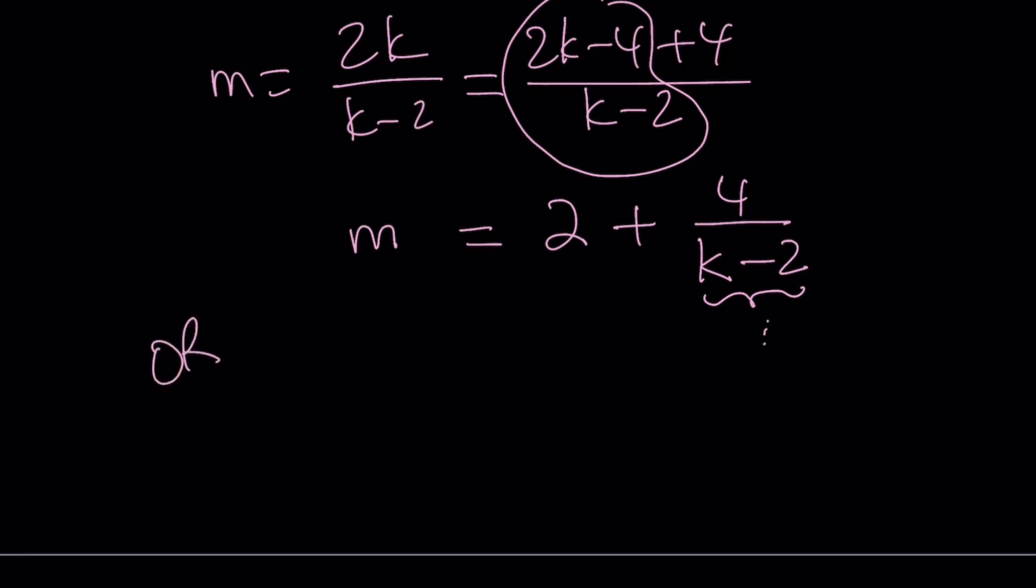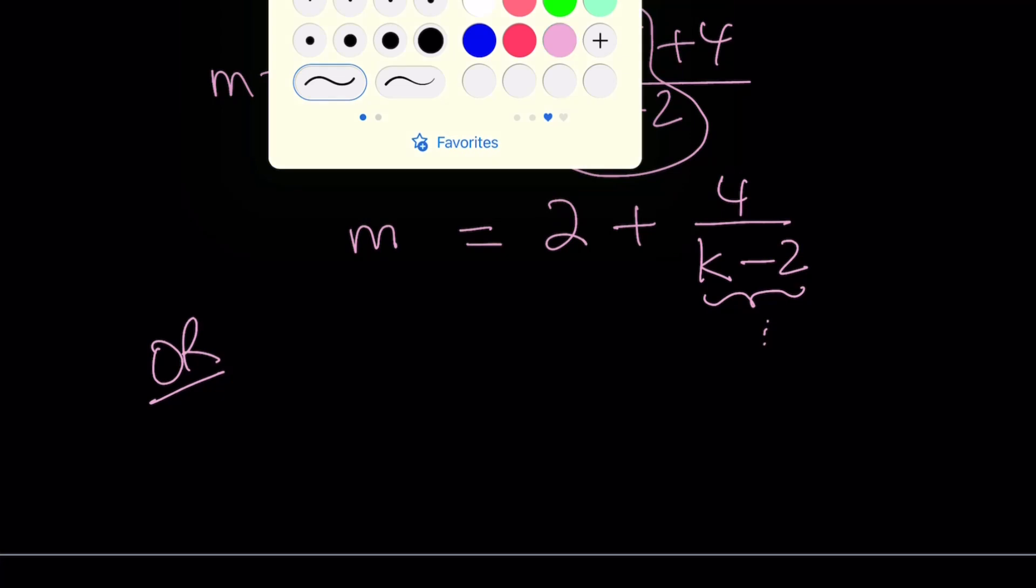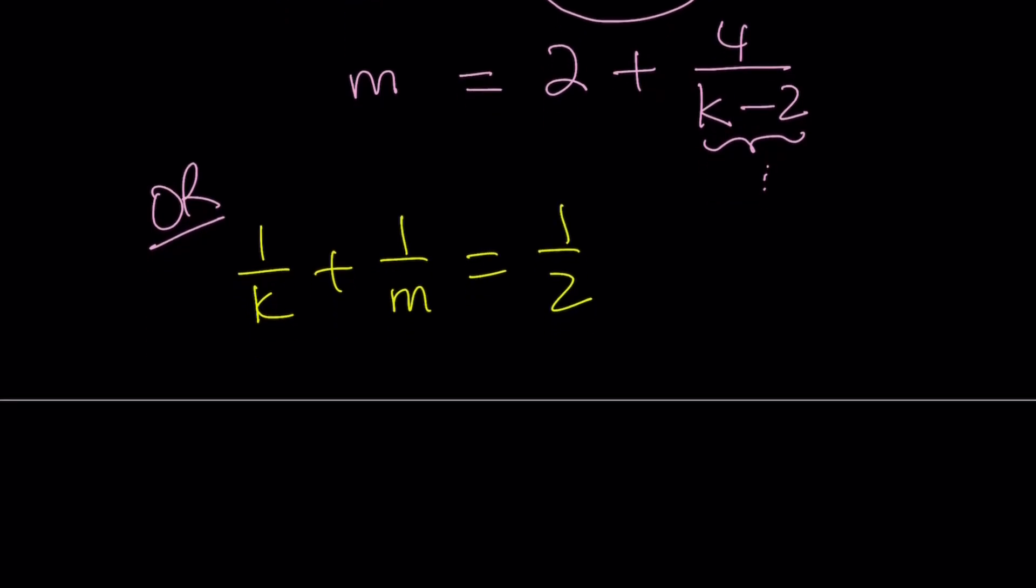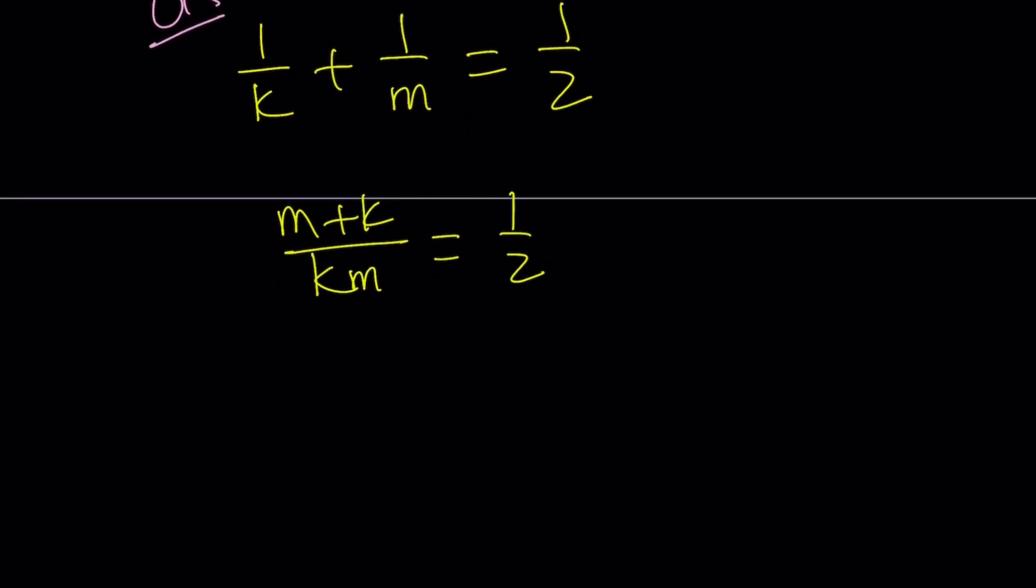Or you can use a different approach. Remember I told you I was going to show you different approaches to the problem. You could also do the following. You have 1 over k plus 1 over m equals 1 half, right? Then for me, you can make a common denominator. m plus k over km equals 1 half. And now let's cross multiply. When we do, we get km equals 2m plus 2k.